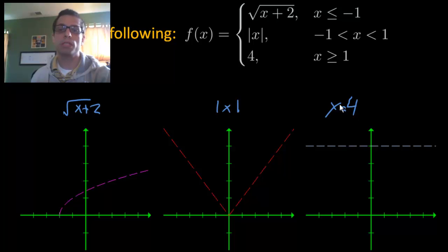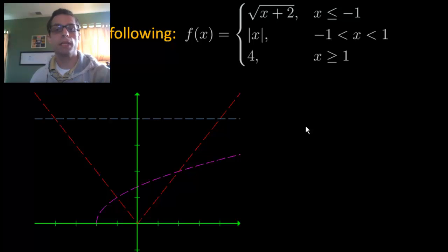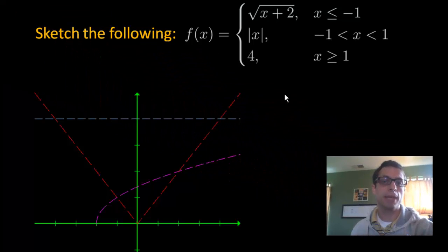Now again, this is a horizontal line, y equals 4. At this point, I'm going to place all three graphs on one big graph. And I'm going to do exactly the same thing as I did in the last example.